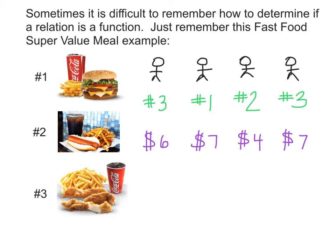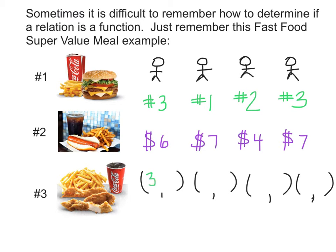Here are four people who went through a drive-thru window at a fast food restaurant. It's about what they ordered — what meal number — and how much they were charged. The input is what they order at the window, and the output is how much money they pay for that meal. Person one ordered value meal number 3 and was charged $6. The next person ordered value meal number 1 and was charged $7. The next ordered value meal number 2 and was charged $4. And the fourth person ordered value meal number 3 and was charged $7.